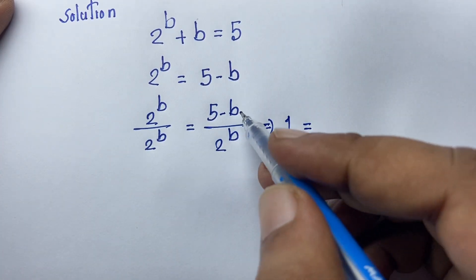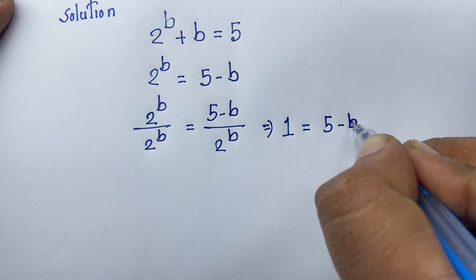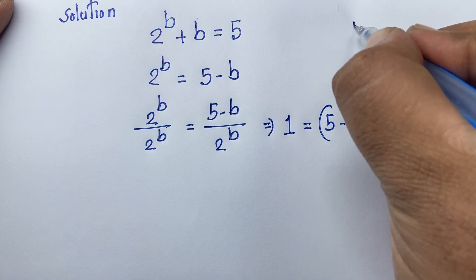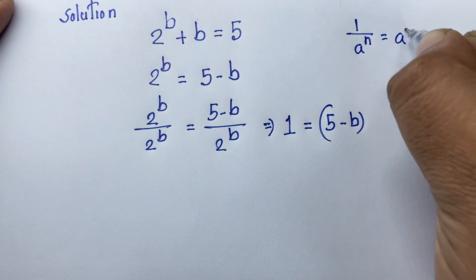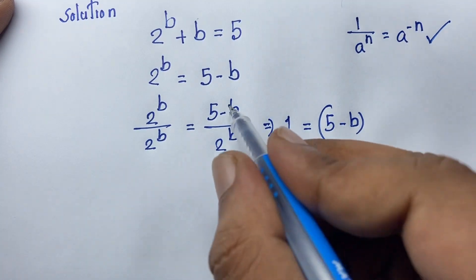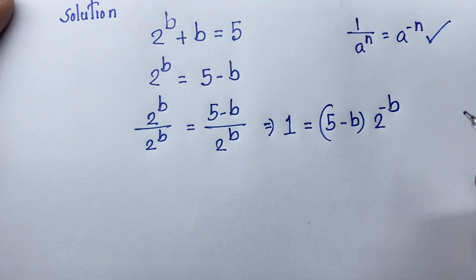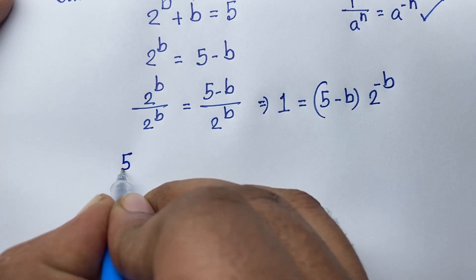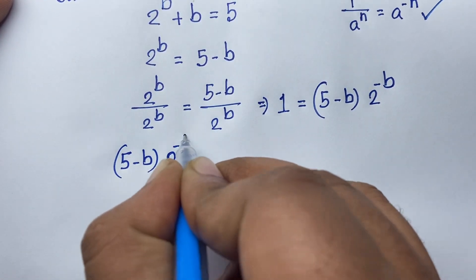So it is equal to (5 minus b) times (1 over 2 to the power b). I know that by the exponential law, 1 over a to the power n equals a to the power minus n. According to this law, 1 over 2 to the power b will be 2 to the power minus b. So our expression becomes (5 minus b) times 2 to the power minus b is equal to 1.